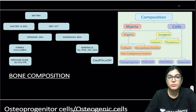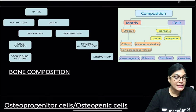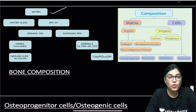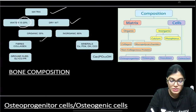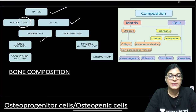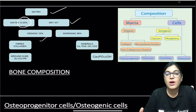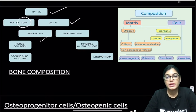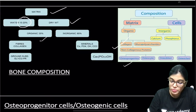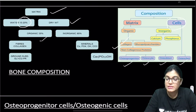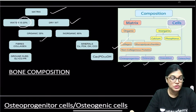The composition of bone includes cells, matrix containing water (approximately 10–20%), organic substances, inorganic substances, collagen fibers, ground substance, and minerals such as calcium and phosphates. The four major cell types are osteoprogenitor cells, osteocytes, osteoblasts, and osteoclasts. There are also osteal lining cells.